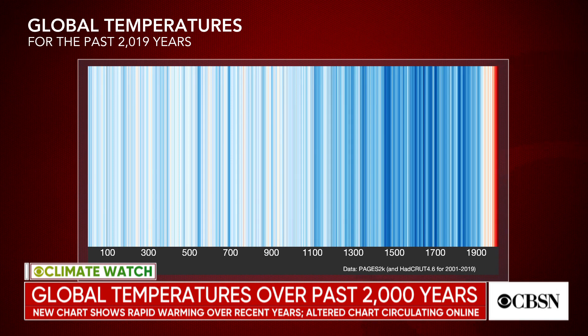What Ed did is he used a collaboration called Pages 2K — Past Global Temperatures 2K. It's a collaboration of many scientists who've come together with all the proxy records in the world and asked: what is our best estimate of how the earth warmed and cooled over the past 2,000 years? That is what they came up with — this data set, which Ed then made into a visualization.